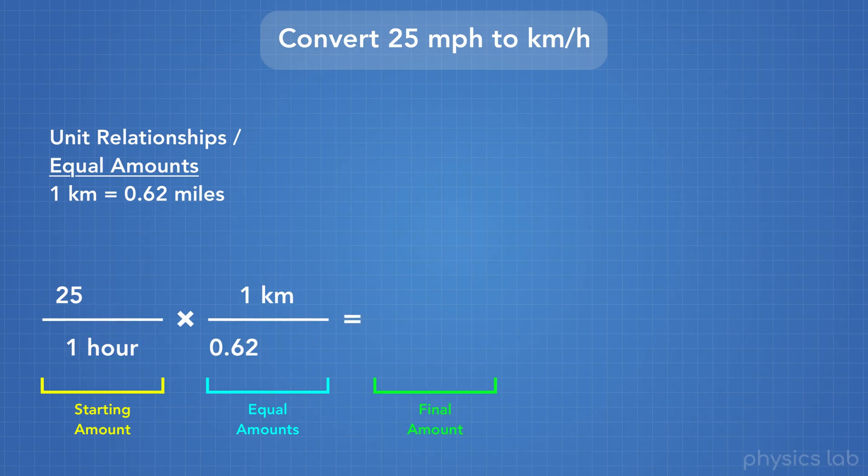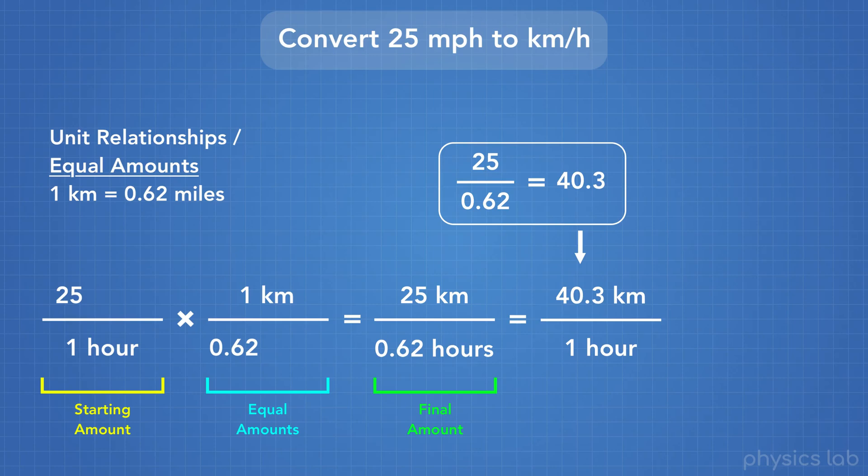To get our answer, we just multiply the top numbers. 25 times 1 kilometer equals 25 kilometers. And then the bottom, 1 hour times 0.62 equals 0.62 hours. So we end up with 25 miles per hour is equal to 25 kilometers divided by 0.62 hours, which is true. But what we really want is kilometers per hour. So to do that, we just finish the math. We'll do 25 divided by 0.62, and we get 40.3. So we write that on top. So our final answer is 40.3 kilometers per hour.